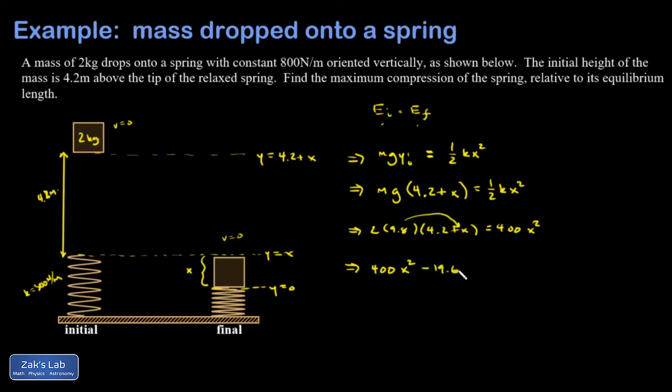So 2 times 9.8 is 19.6x. When I subtract that, I get negative 19.6x, and then I have 19.6 times 4.2. That's my constant term there, but I have to subtract it to get it over to the right-hand side. So I get minus 82.32 equals 0.